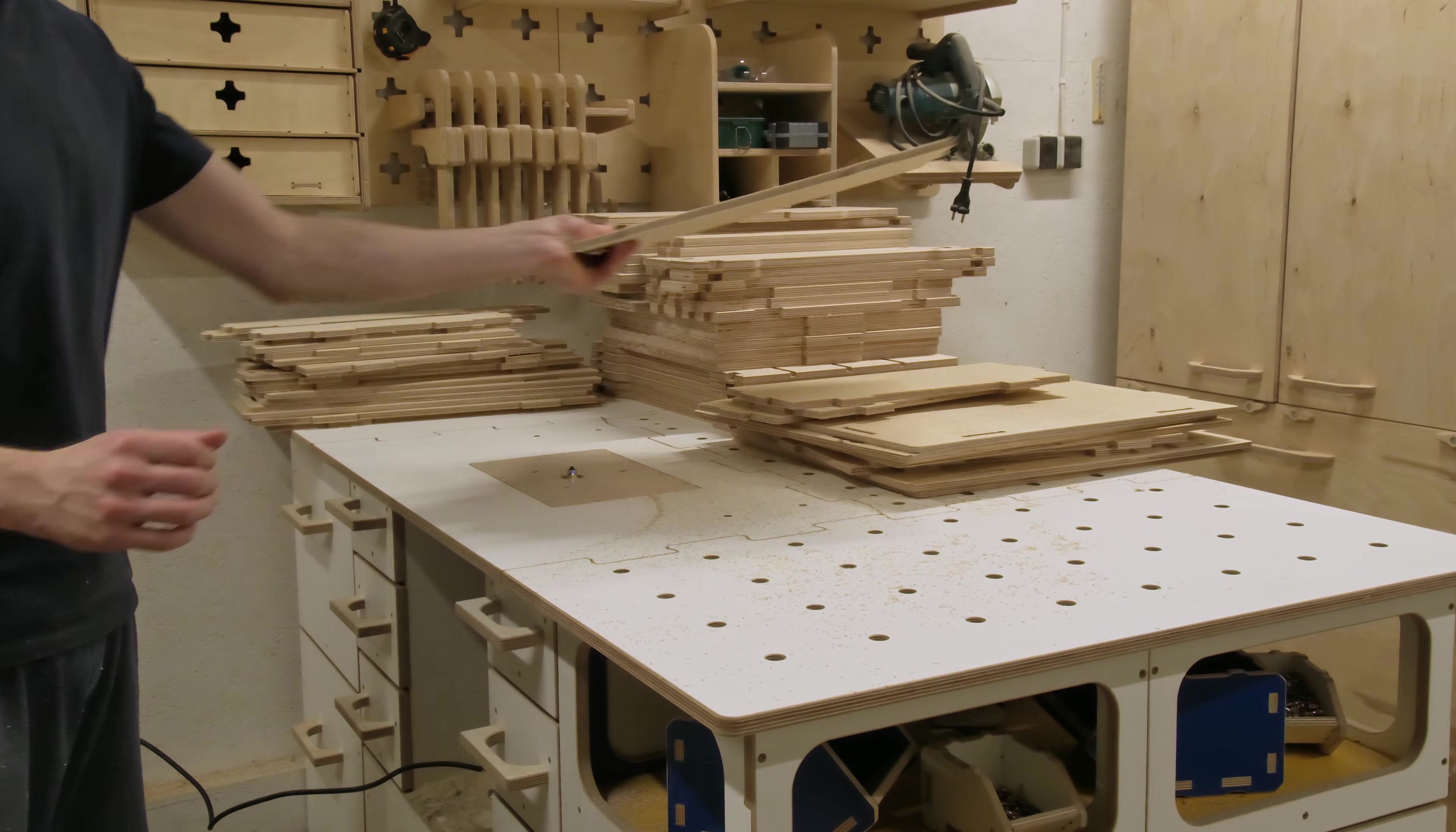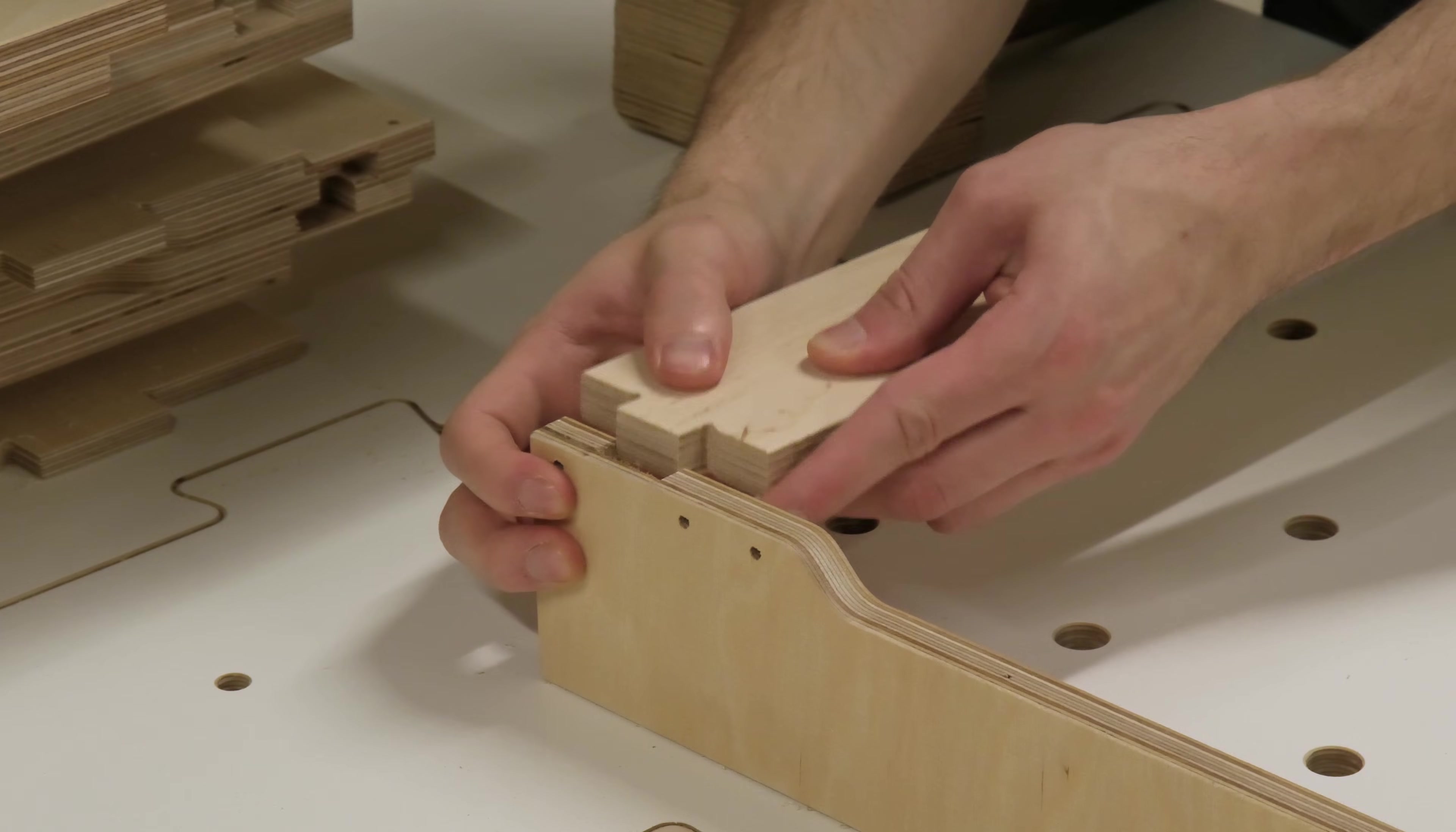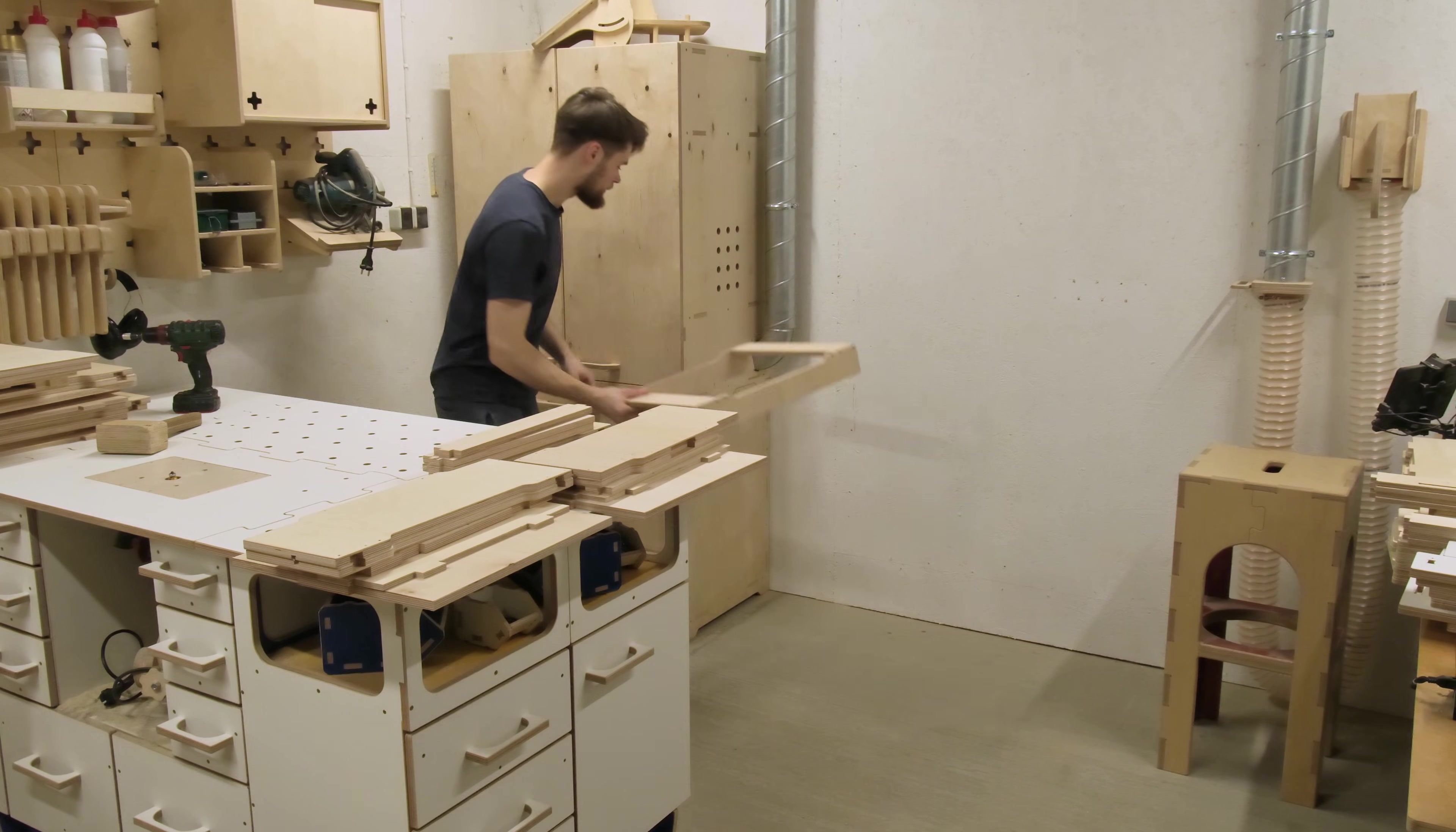With all the parts ready, it's time to assemble. We start with the base frame, which includes a built-in toe kick area. The side panels are joined to the floor strips and bottom reinforcement, and we secure the joints with screws to make sure everything is sturdy enough to support the modules we will stack on top.